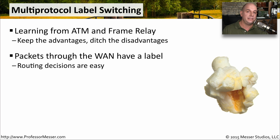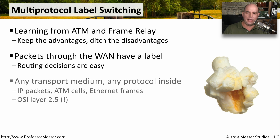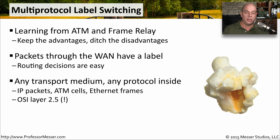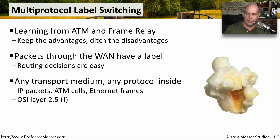MPLS also made it very easy for end devices on the network to know exactly where traffic was going, because it had a very easy-to-follow label. This allowed us to put really anything inside this transport mechanism — we could put IP information, ATM cells, or ethernet frames — and run it all across a common MPLS network. It's not quite layer two and not quite layer three; it sits somewhere in the middle on the OSI model.